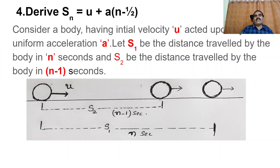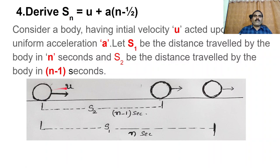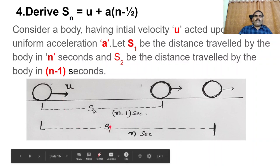The next equation is very important. In our 9th class syllabus it is not given, but it may be used in solving some problems. Consider a moving body. Let U be the initial velocity, acted by acceleration A. Let S1 be the distance travelled by this moving body in N seconds.